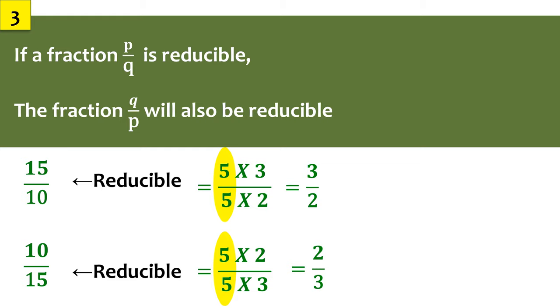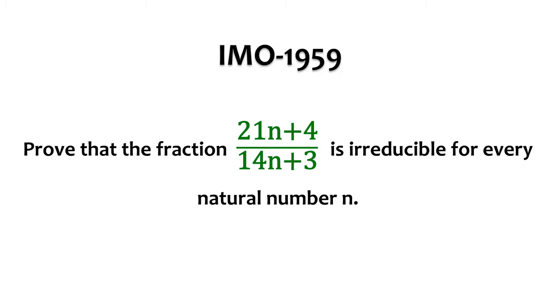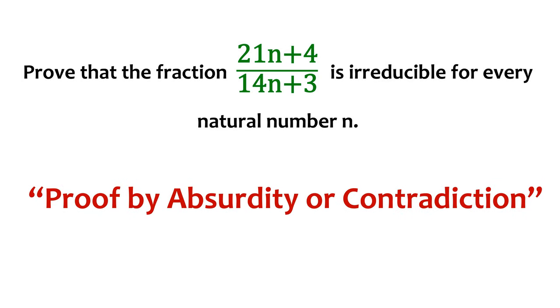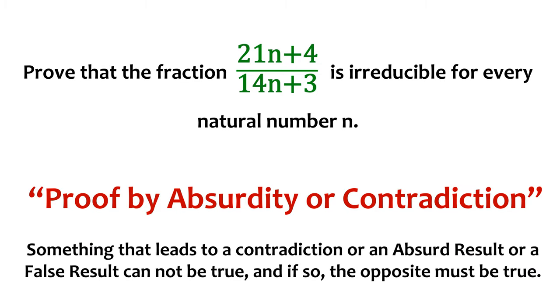So now, let's move on to our original question. We have got to prove that the fraction (21n + 4)/(14n + 3) is irreducible for every natural number n. Guess what? We are going to use a very interesting sounding method called proof by absurdity or contradiction. Not only does it sound interesting but also is interesting. It is a common proof technique that is based on a very simple principle. That is, something that leads to a contradiction or an absurd result or a false result cannot be true and if so, the opposite must be true.